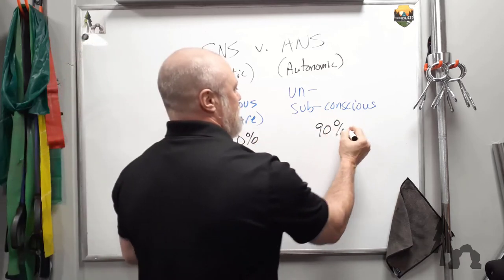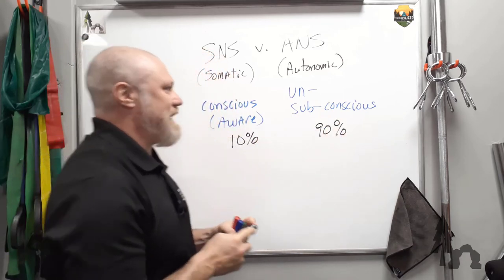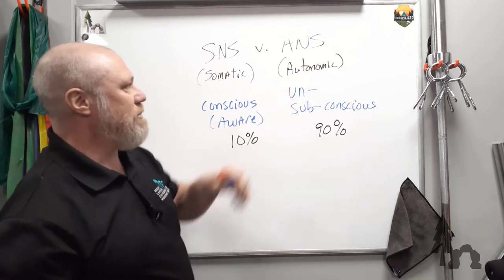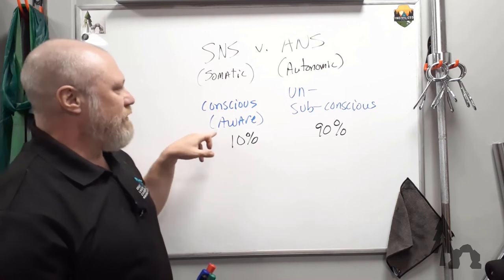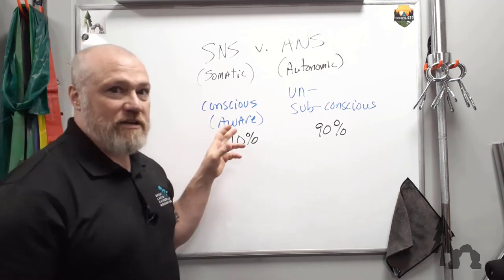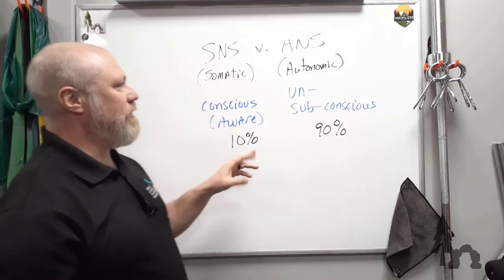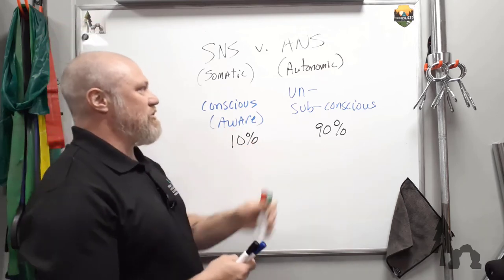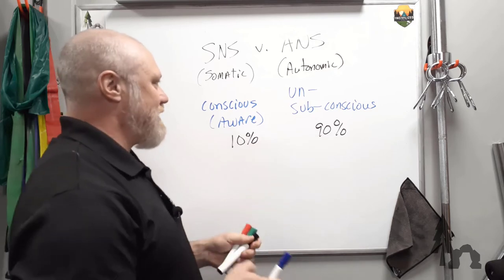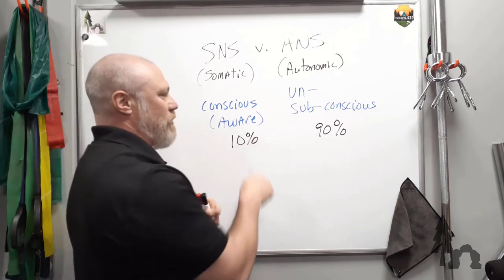And it only accounts for about 10% of the total work that your nervous system does. Most of it, the vast majority, or 90% or more, is unconscious nervous system and the autonomics. This is probably where we get that stupid phrase that says you only use 10% of your brain. That's probably where it came from. It's not true at all. You use 100% of your brain, you don't have 90% redundancy. It's just that 90% of it is not under your direct control or even awareness.